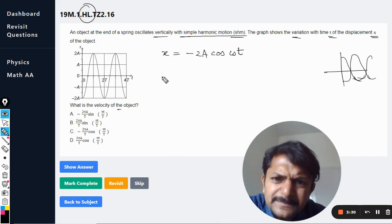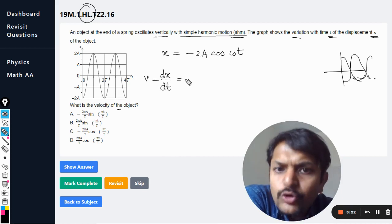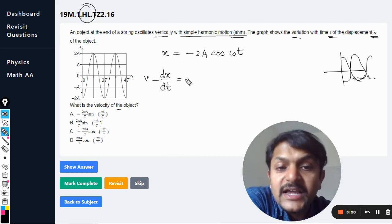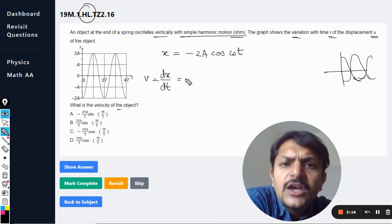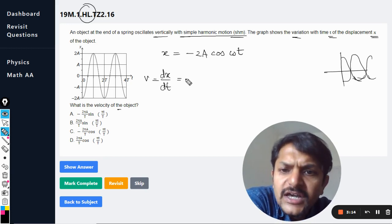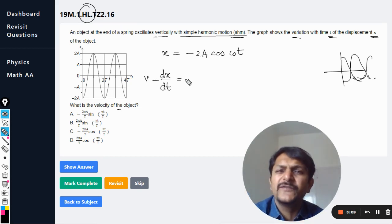So this is the displacement and we want to find the velocity, so clearly we can differentiate it. And if you do not want to differentiate, even then in the data booklet the equation is given. Like if you are using x is equal to cos ωt, so the velocity variation is given, but there is a negative sign involved here.